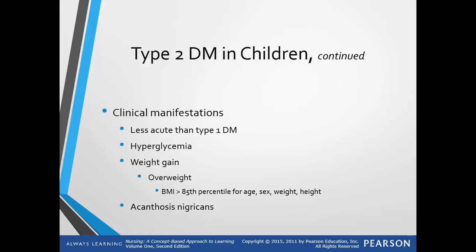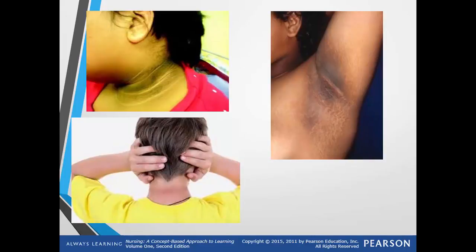Acanthosis nigricans is usually found on the neck, thigh, axilla, and knuckles. Some examples of what this looks like are shown here.